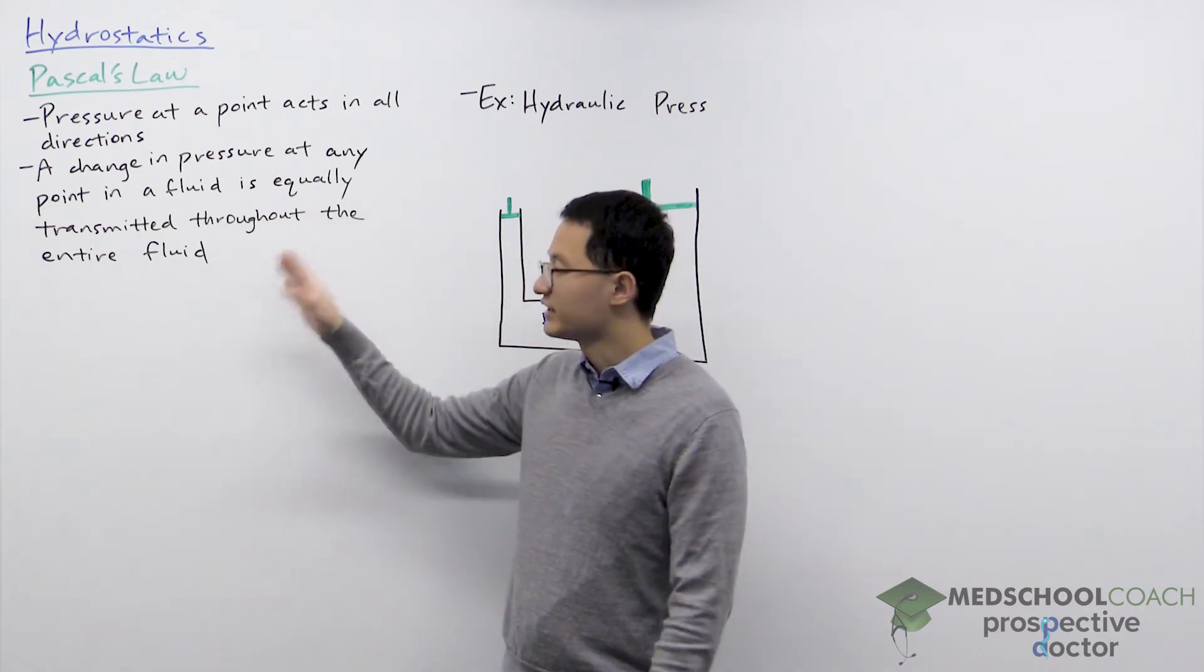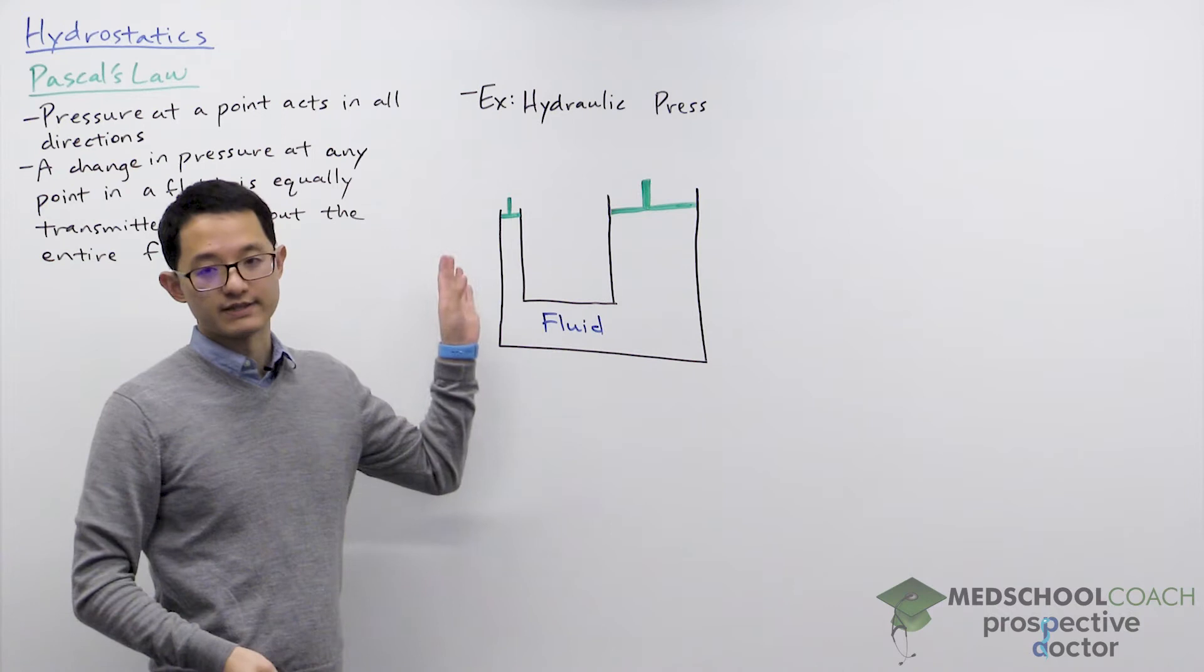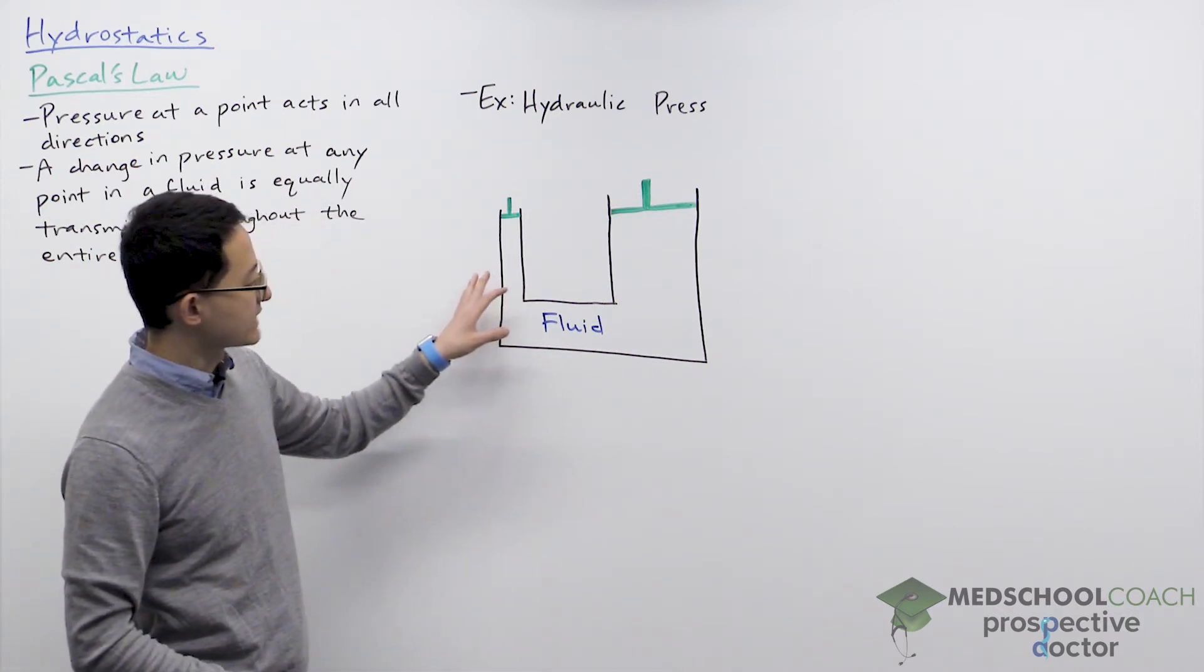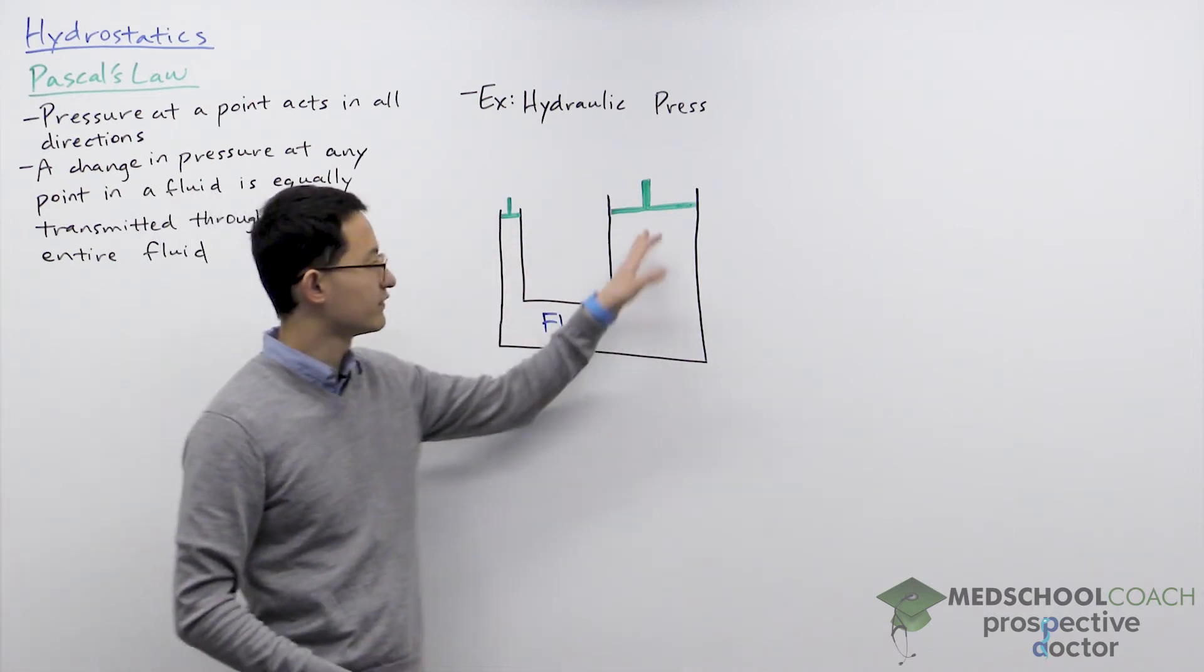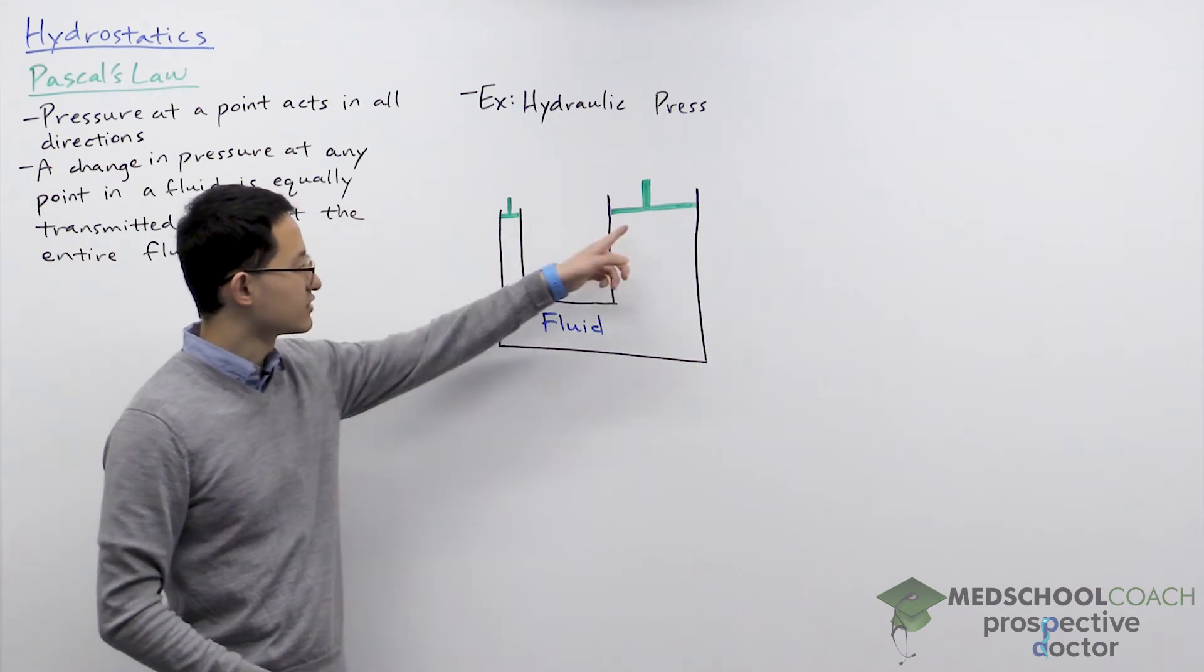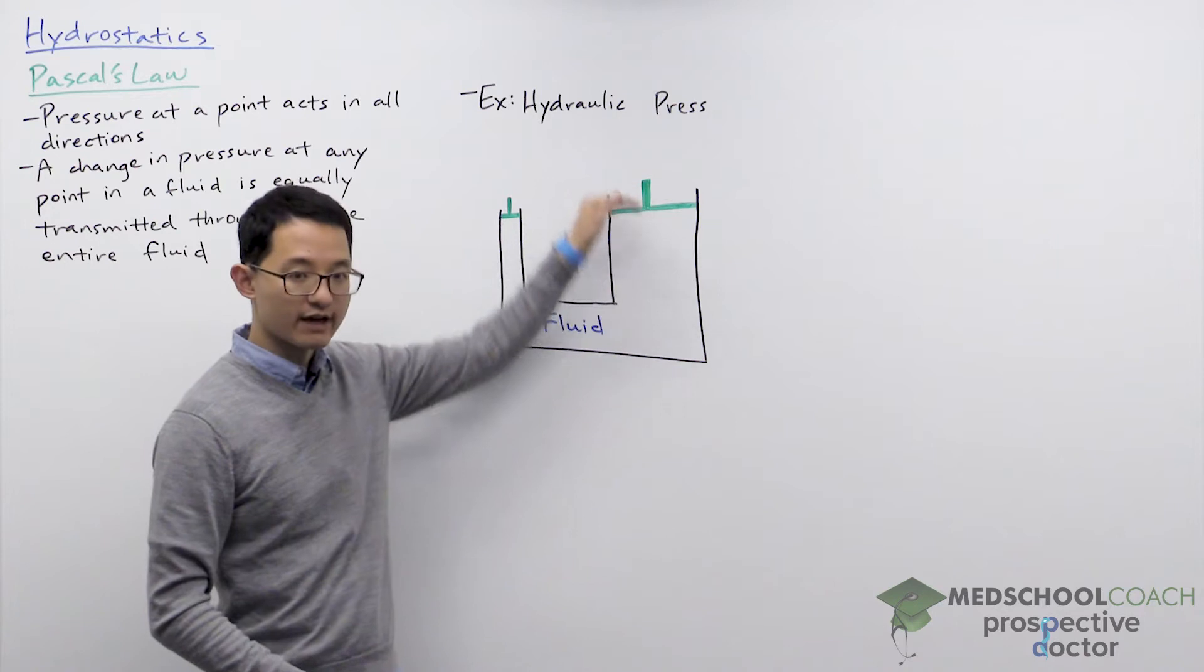Now a very good example of how this works is hydraulic presses. So a hydraulic press essentially has a container that is filled with fluid. So this region here is filled with fluid and it has two ends and both of them essentially have this piston that can be moved up and down.